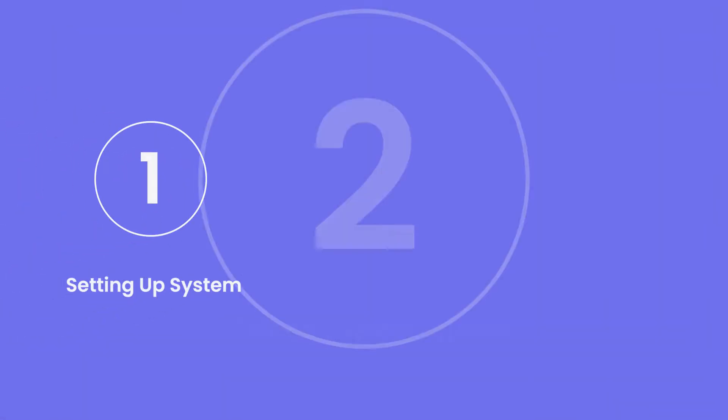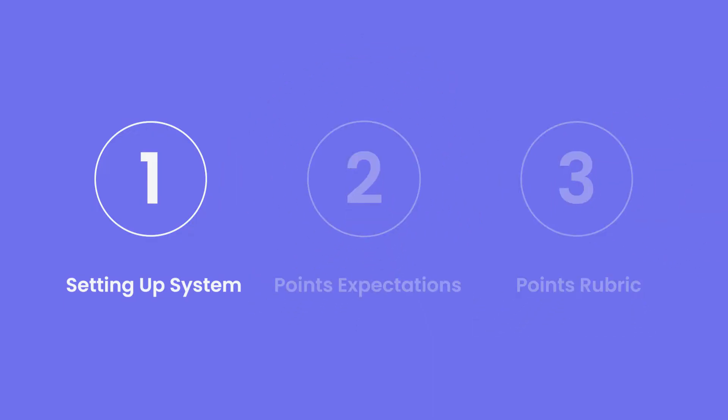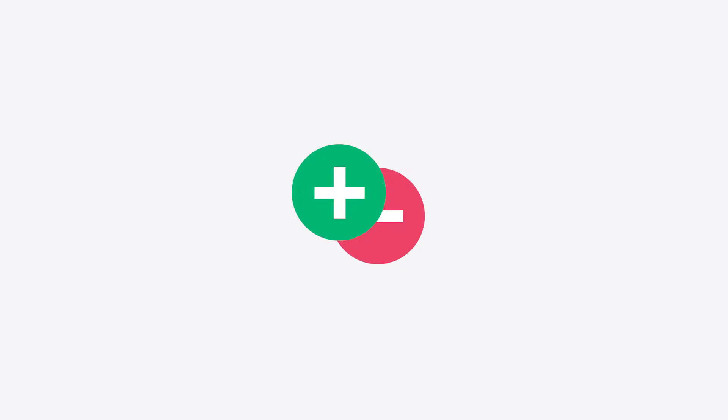When setting up your point system in LiveSchool, the first thing to consider is the type of behaviors you want to track. Do you want to focus on positive behaviors to promote positivity in your school, or do you want to track both positive and negative behaviors, with students receiving merits and demerits?